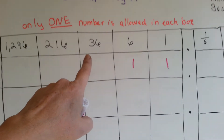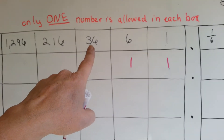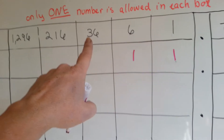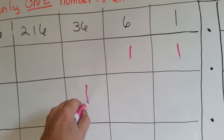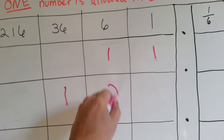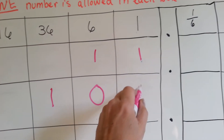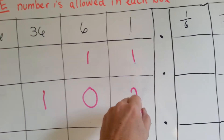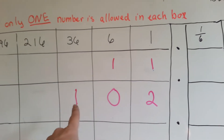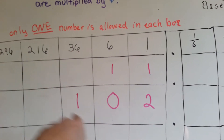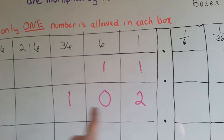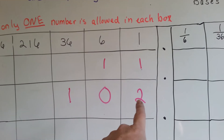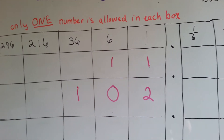If you wanted to make 38, you would have 1 of these 36's, no 6's, and you would have 2 ones. 36, 37, 38. It would be written as 1 0 2.